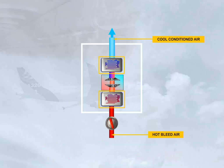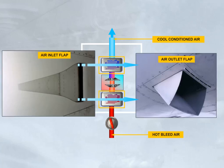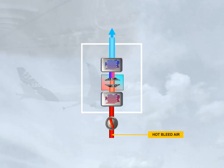Two of the stages are heat exchangers. They cool the hot bleed air using the flowing ambient air. This flow of air enters via the ram air inlet flap and exits via the ram air outlet flap. So that the output temperature of the pack can be adjusted, a bypass valve is fitted. This valve allows warmer air to be mixed with the cold air.